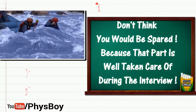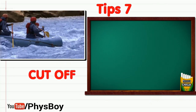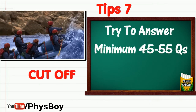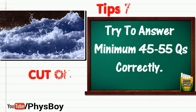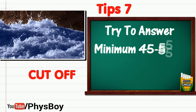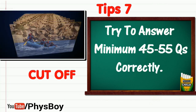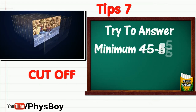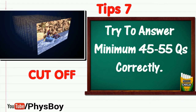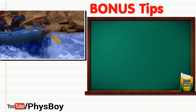Tip number seven: cut-off. As far as I know, if you solve a minimum of 45 to 55 questions correctly then you will likely be selected for the interview. Try to correctly answer at least 45 to 55 questions. As mentioned earlier, the exam is only a qualifier — the score will not matter once you are selected for the interview. Even the last shortlisted candidate can be selected or the first ranker might not make it.